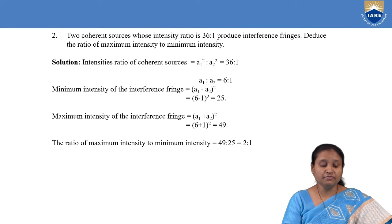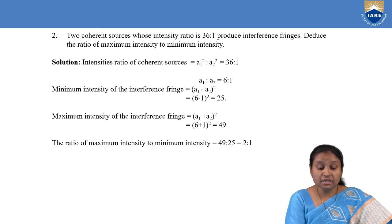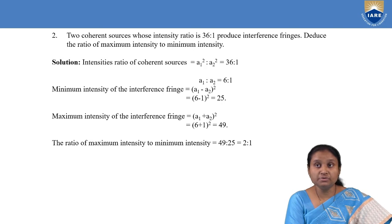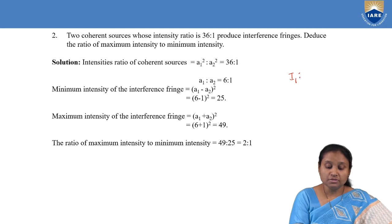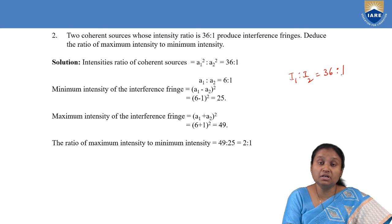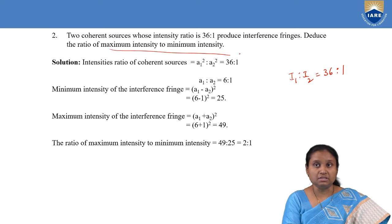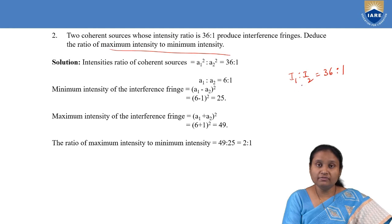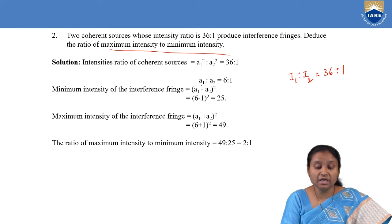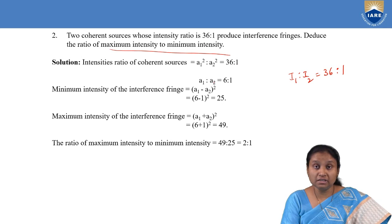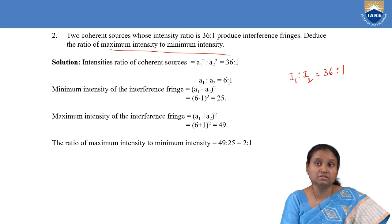Moving to the second numerical, here we also have two virtual coherent sources whose intensity ratio I1 to I2 is given as 36 to 1. These two intensities are forming interference fringes and we need to find the ratio of maximum intensity to minimum intensity. We can write the intensity ratio in terms of amplitude as A1 squared to A2 squared equals 36 to 1. Taking the ratio of amplitudes, A1 to A2 equals 6 to 1.